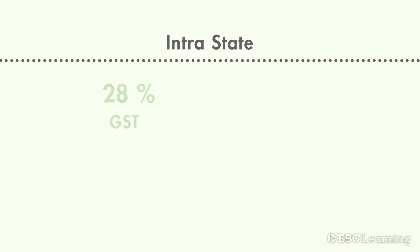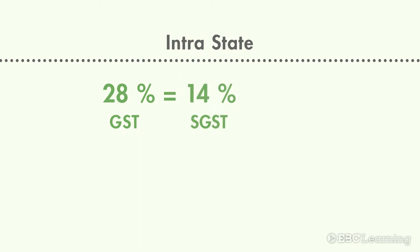Let us understand the GST model through different scenarios. Scenario 1: suppose there is a transfer of goods within a state. If the GST rate is 28%, then 14% will go to the state as SGST and 14% will go to the center as CGST. Income will go to the state and central government directly, therefore the nomenclature is different.